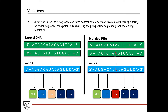If you substitute this thymine here, you end up with a uracil instead of an adenine in the mRNA sequence, which changes the codon so that instead of a tyrosine, now you have a phenylalanine. You've changed the polypeptide sequence, which can then have an effect on protein structure and even protein function.